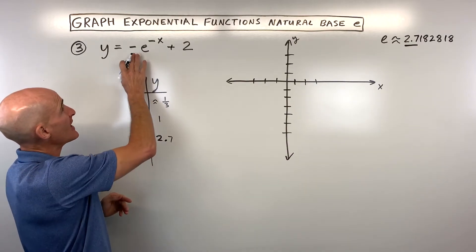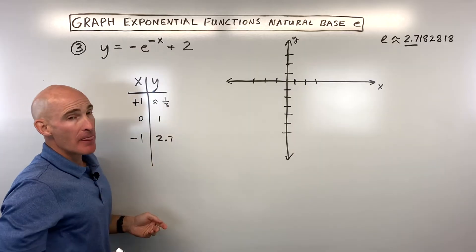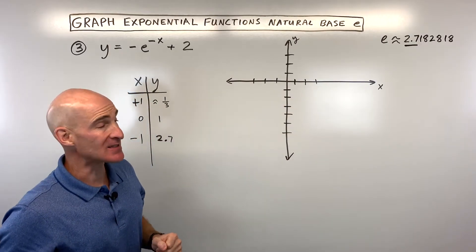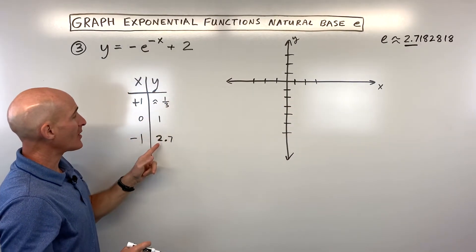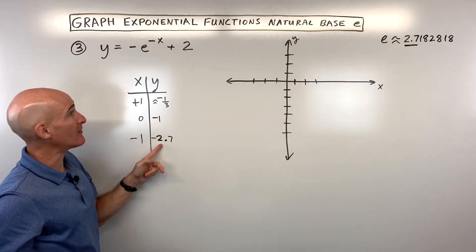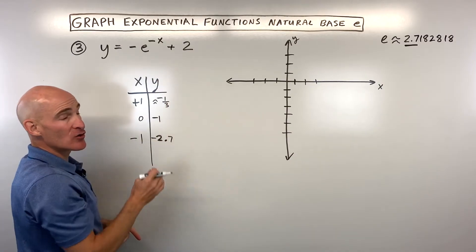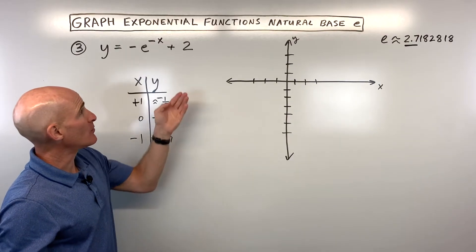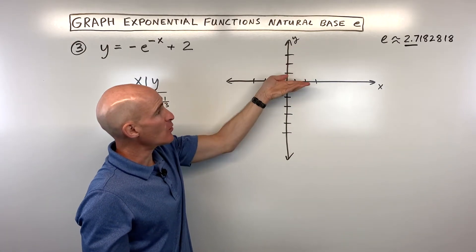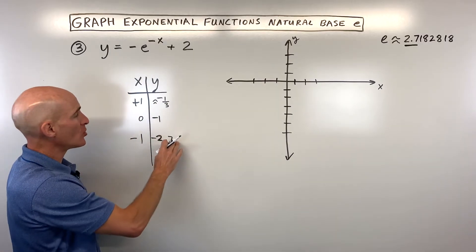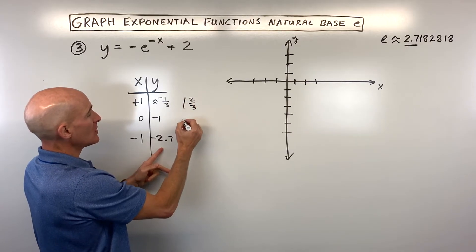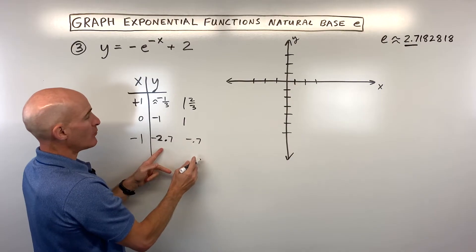Now this negative in front is going to make all the y-values the opposite, reflecting the graph over the x-axis. So multiplying the y-values by negative 1 gives us negative one-third, negative 1, and negative 2.7. Then lastly, the plus 2 shifts the graph up 2, adding 2 to all the y-values, putting us at one and two-thirds, 1, and negative 0.7.